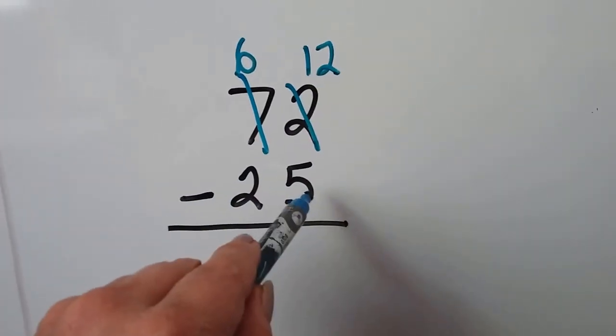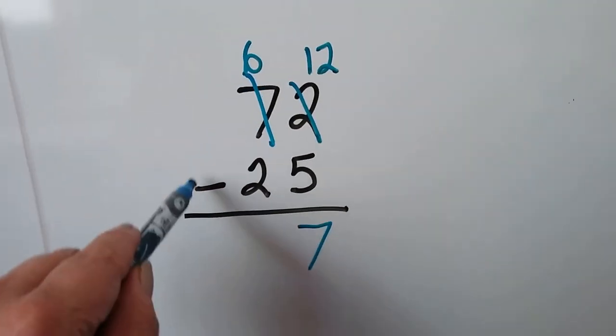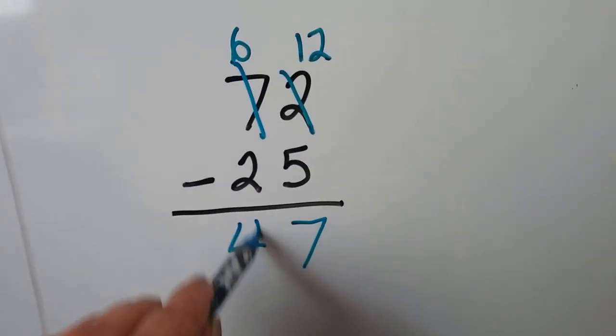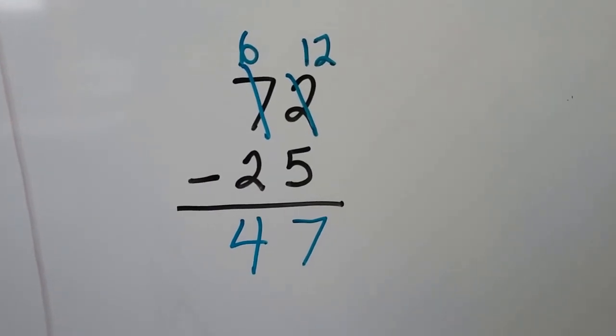12 minus 5 is 7. And 6 minus 2 is 4. We get 47 for our difference.